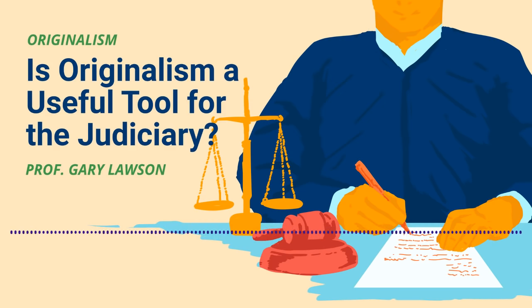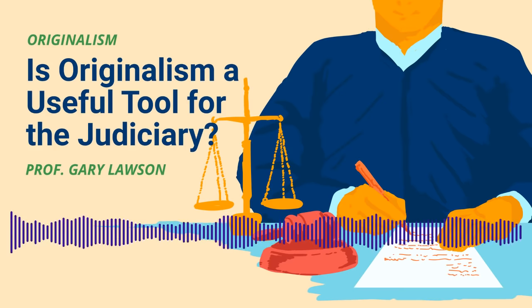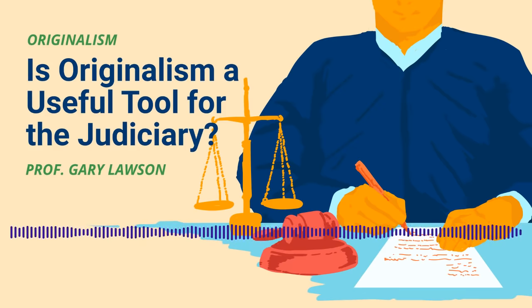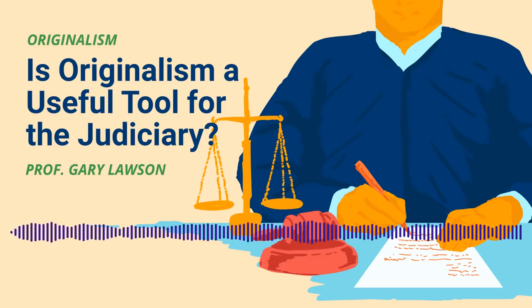In this episode, let's talk about how originalism can or should be used, particularly by judges. First, when should the judiciary defer to other actors, such as Congress? When is it necessary to invalidate a statute, and can originalism help judges determine that? There are certain respects in which the Constitution orders federal courts to give weight to the views of other actors.